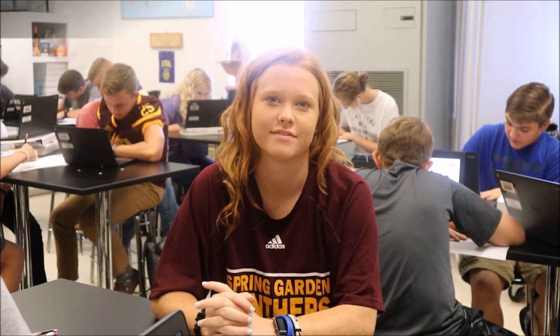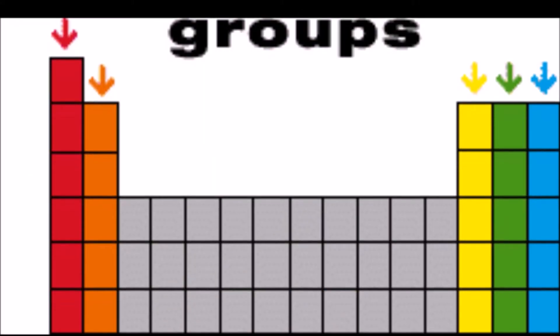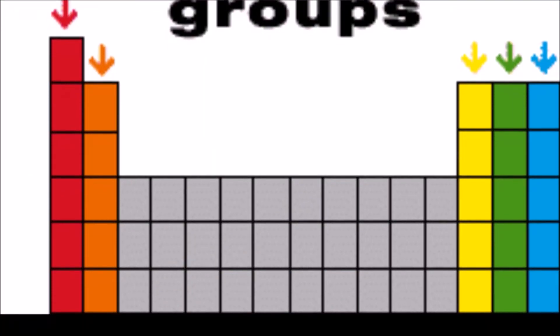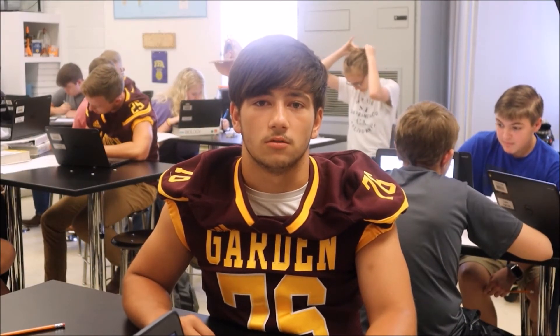Elements are also arranged in columns and rows on a Periodic Table, based on their atomic structure and how they behave chemically. Each column on the Periodic Table is called a group. Groups represent information about how an element bonds.